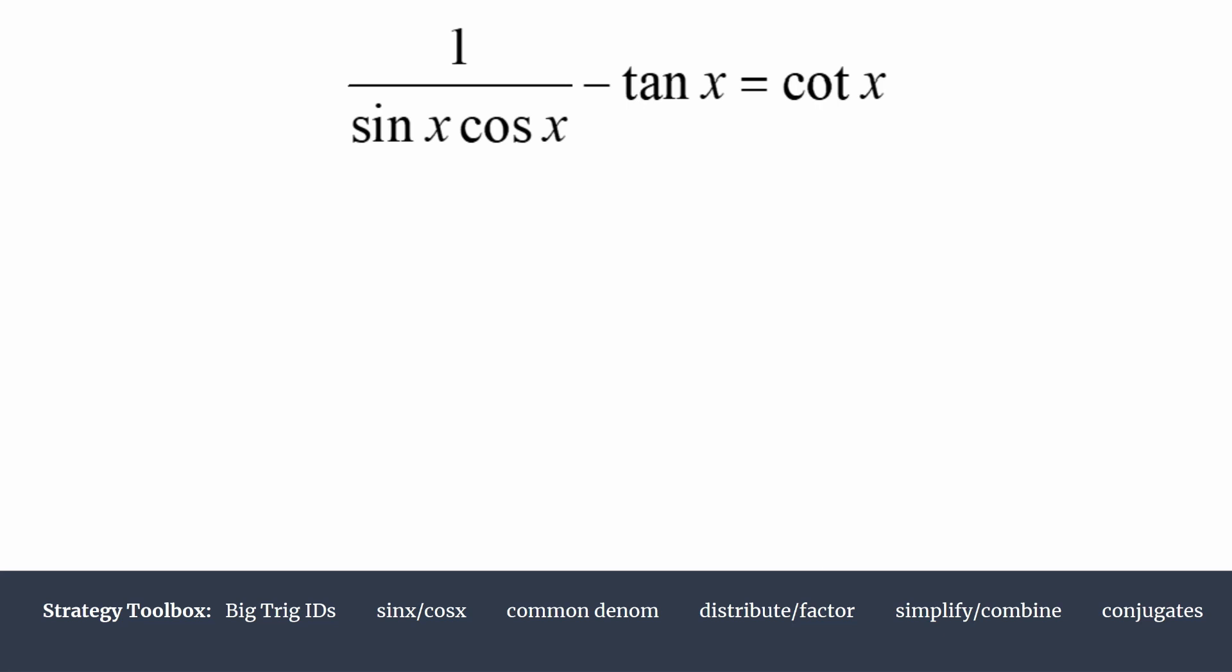We'll choose the left side in this case. We're trying to manipulate it until we get it to be exactly like the right side, cotangent x. Another thing we need to do is strategize. It may be helpful to rewrite tangent in terms of sine and cosine using that quotient identity. Let's get started now that we've decided which side to work on and we've strategized.